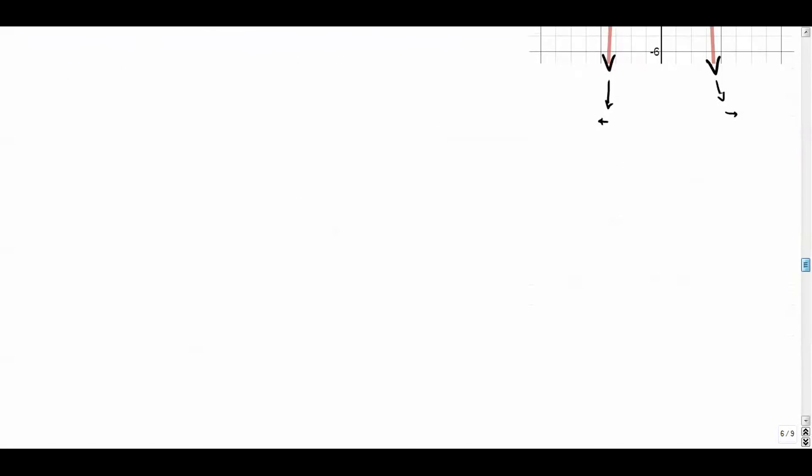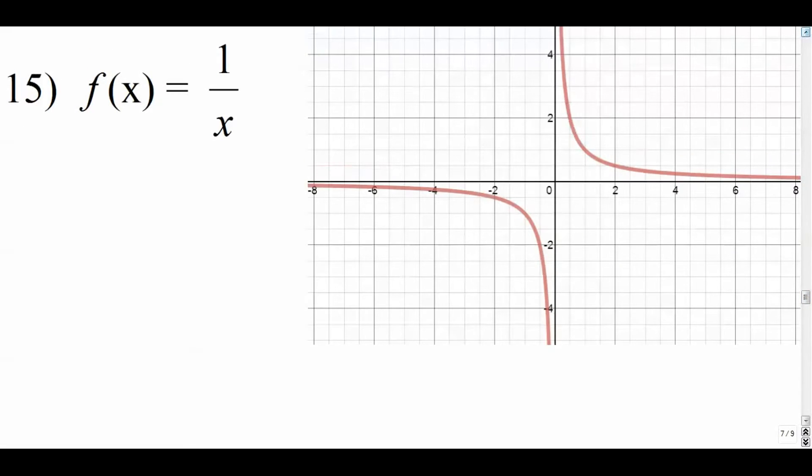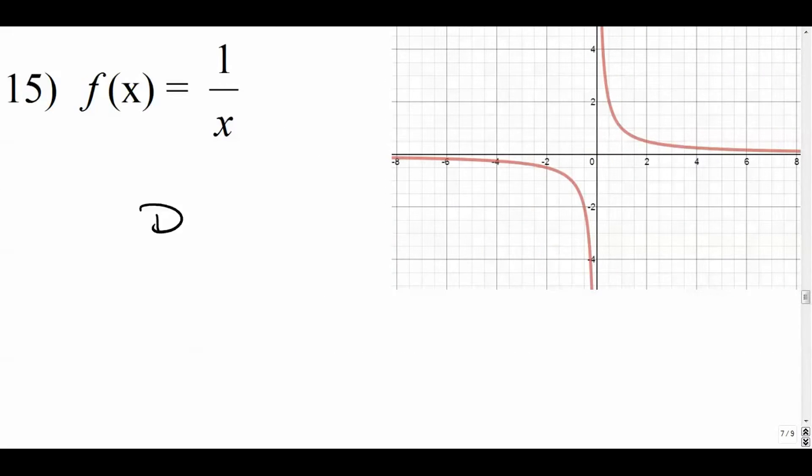Moving on. Fifteen. We're looking at a function one over x. And I graphed this for us as well. So we're seeing that we have domain and range restrictions. Again, domains, you want to start thinking about up and down. So as we scan in from the left, we see that it goes from negative infinity. And then all of a sudden, we see that we have an asymptote right there. And the asymptote is at x equals zero.